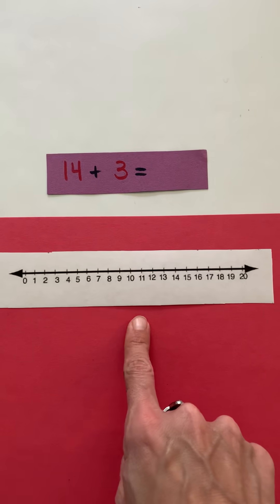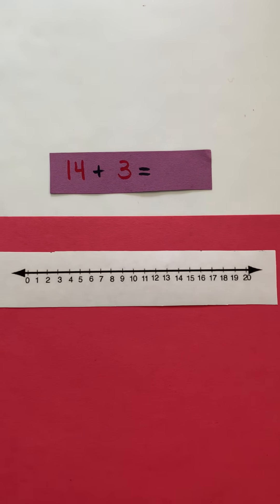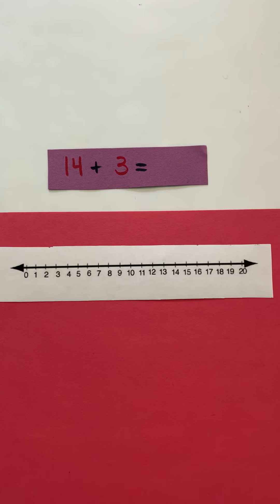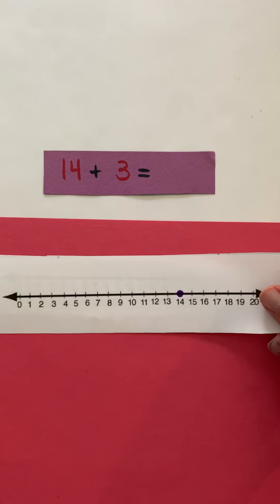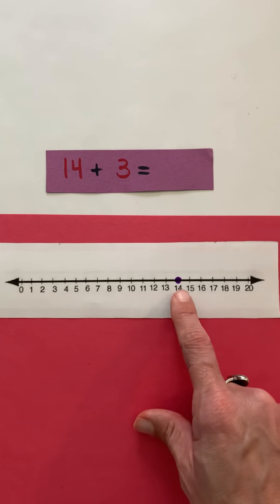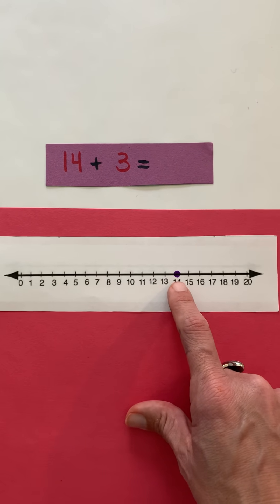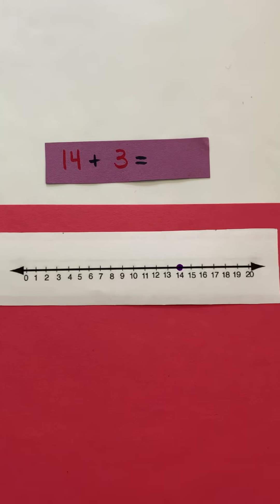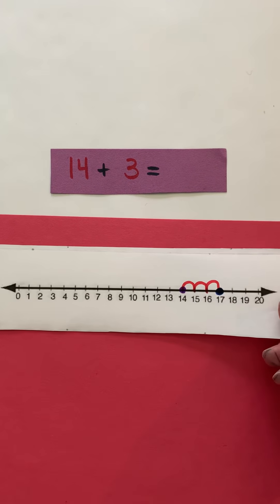We've got this number line here. What I want to first do is represent the number 14 because it's the largest digit, and then I only have to jump or add three ones. On my number line I'm going to put a dot, or I can put my finger where 14 is. Some of you may use your fingers and jump over, some may want to put a dot and then do some jumps.